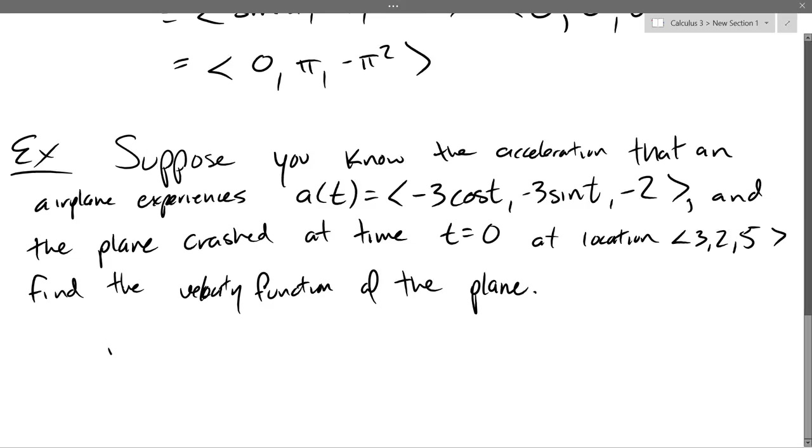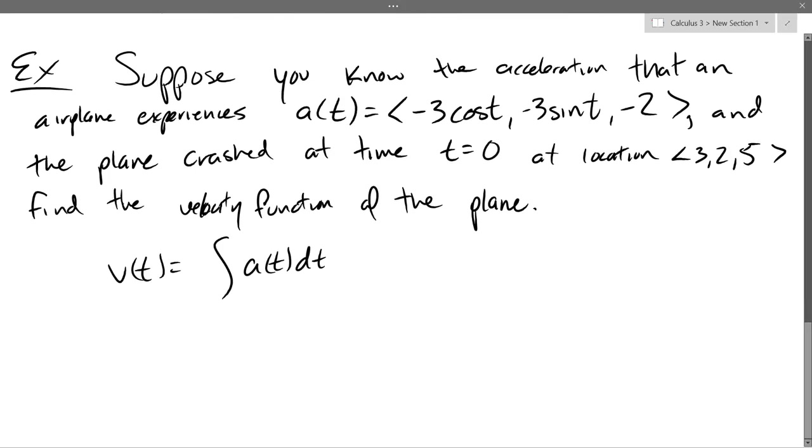So how is velocity related to acceleration? Take the derivative. So derivative velocity is acceleration or the anti-derivative acceleration is velocity. So that's how we're going to relate the two. So we want to find the velocity. So if I read it as V T equals, it's going to be the anti-derivative At D T. So we're going to get the integral negative 3 cos T, negative 3 sin T, negative 2 D T. So compute this anti-derivative right now.